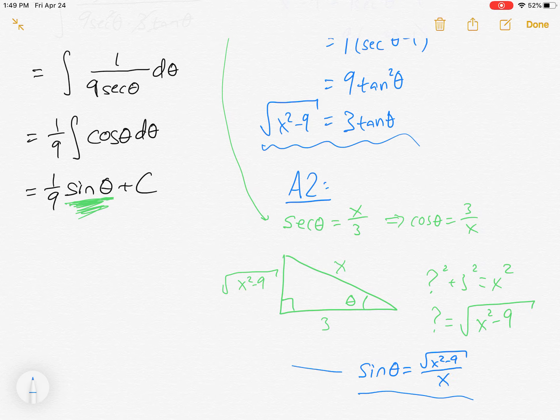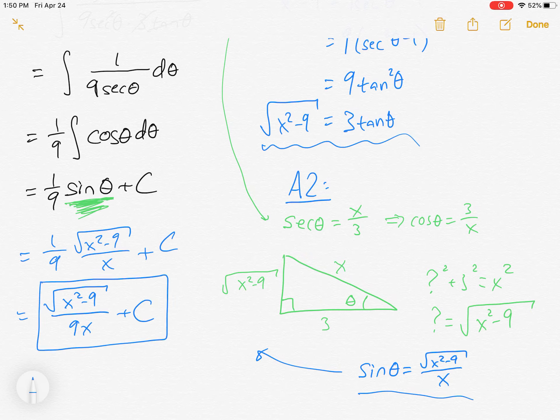So I can say that sine of theta must be square root of x squared minus 9. No, you cannot simplify that. If you could, it would have been simplified in the beginning, but you cannot simplify that over x. Take that and bring it over here. So our answer is 1/9 times square root of x squared minus 9 over x plus C, or we could write that a little bit nicer as square root of x squared minus 9 over 9x plus C.